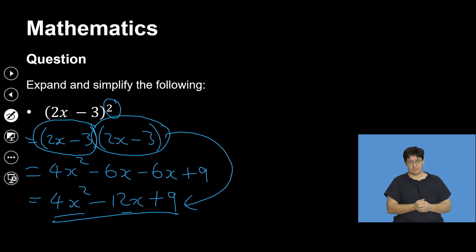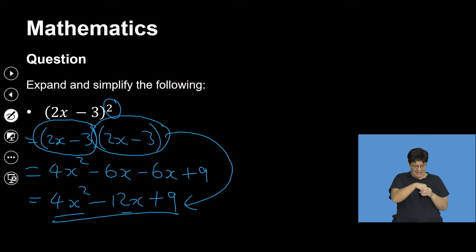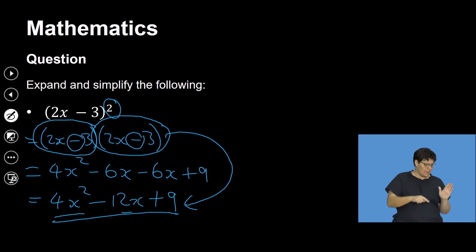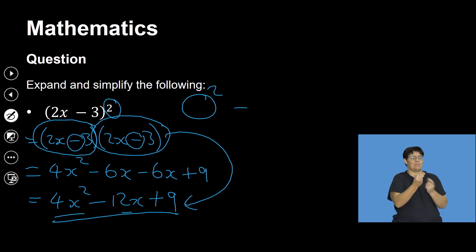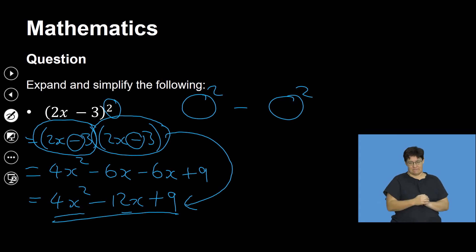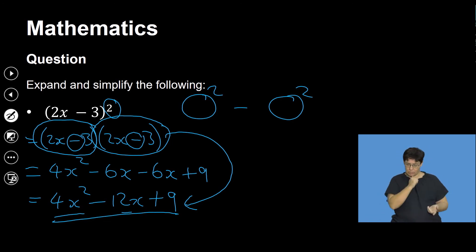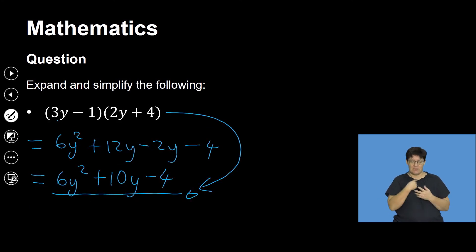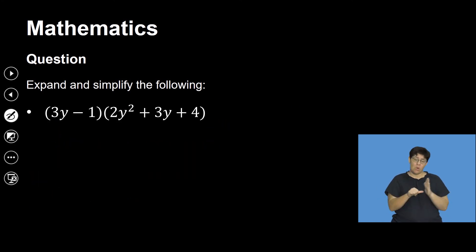So I've shown three examples of multiplying two binomials: one where you get a trinomial, one where you get a binomial — the difference of two squares — and one where you get a trinomial again. The difference of two squares occurs when you multiply brackets with the same factors but opposite signs. If both signs are the same — like both minus — you won't get a difference of two squares. This is important when we get to factorization later.